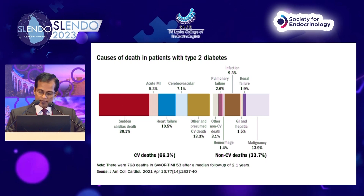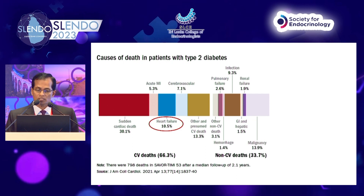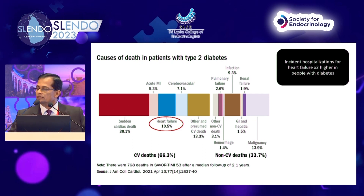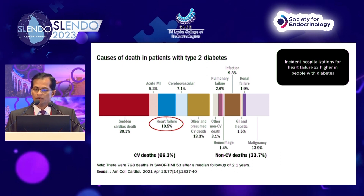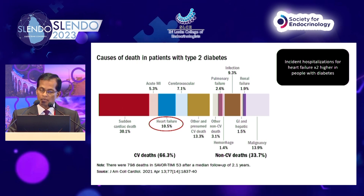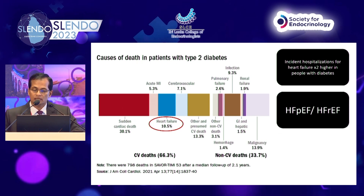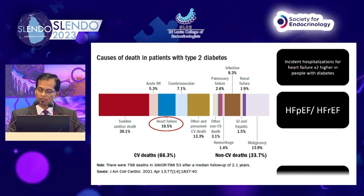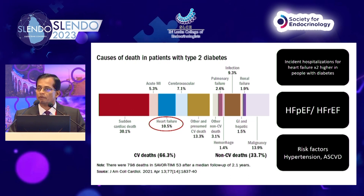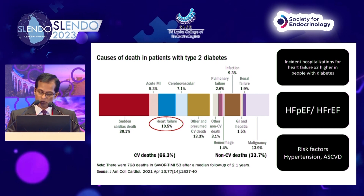10.5% of patients with diabetes will die from heart failure, which is a huge amount. The incidence of hospitalization for heart failure is twice as high in people with diabetes compared to non-diabetic patients, and it can be either preserved or reduced ejection fraction. The main risk factors for heart failure in diabetes are again hypertension and ASCVD, so we need to address these things together.